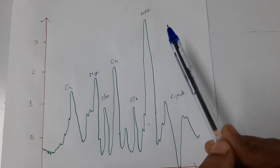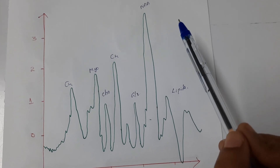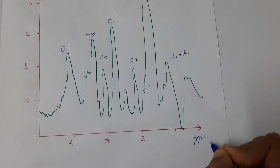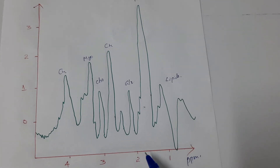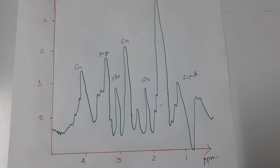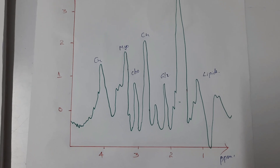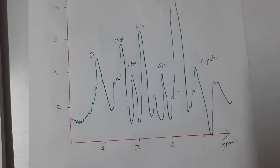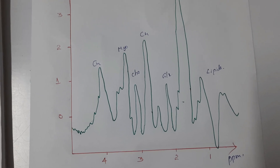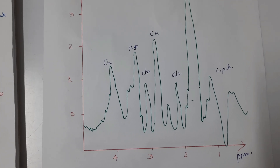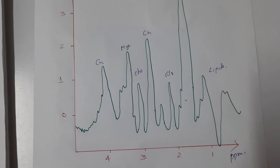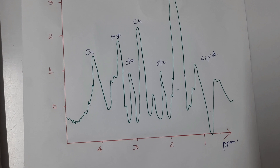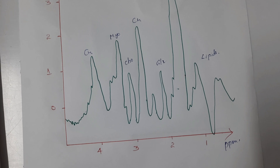NAA means N-acetyl aspartate. In normal brain tissue, the peak of NAA will be the highest and it is assigned at 2.02 ppm. The axis represents the concentration of the metabolites in terms of ppm. NAA is a metabolite that is synthesized in the mitochondria of neurons and is transported in the neuronal cytoplasm. It is exclusively found in the nervous system and is detected in both grey and white matter.